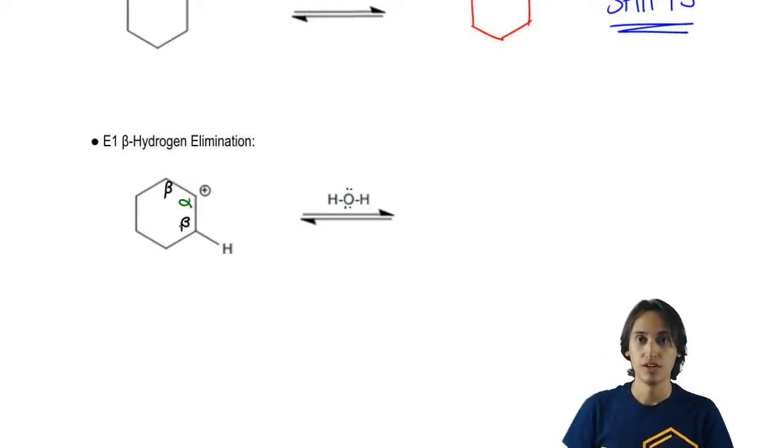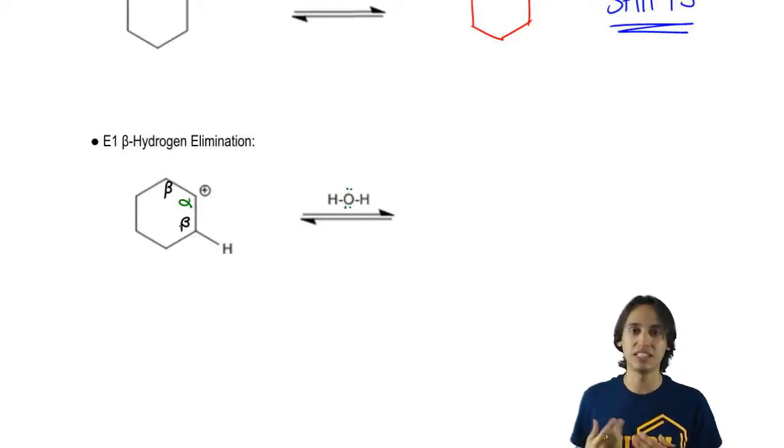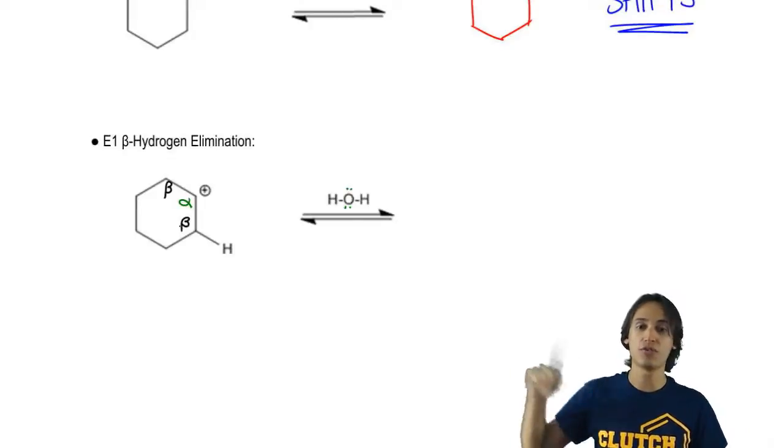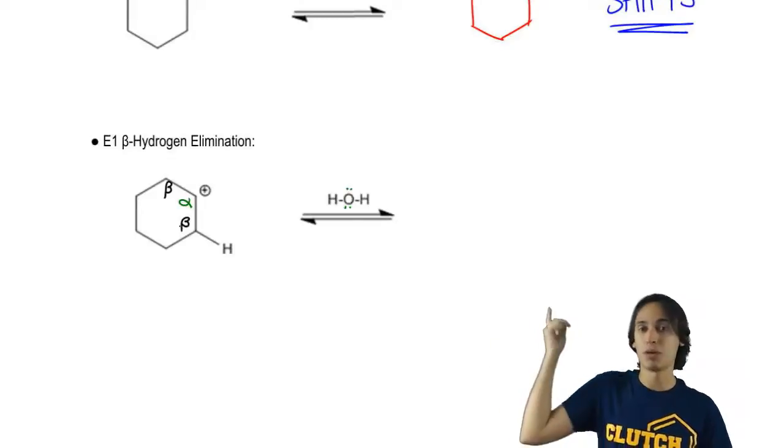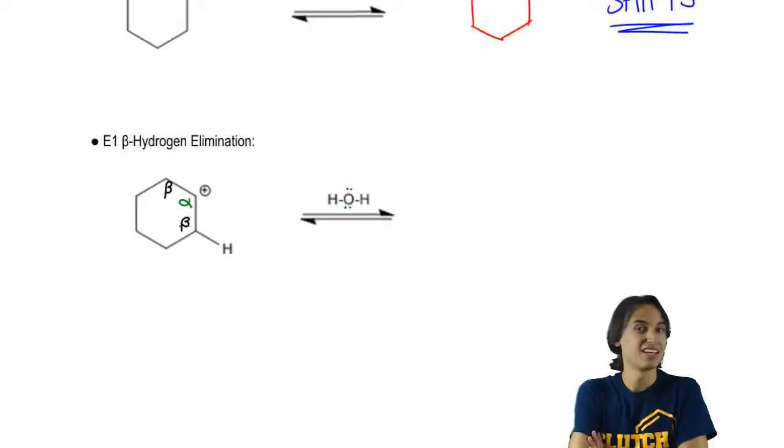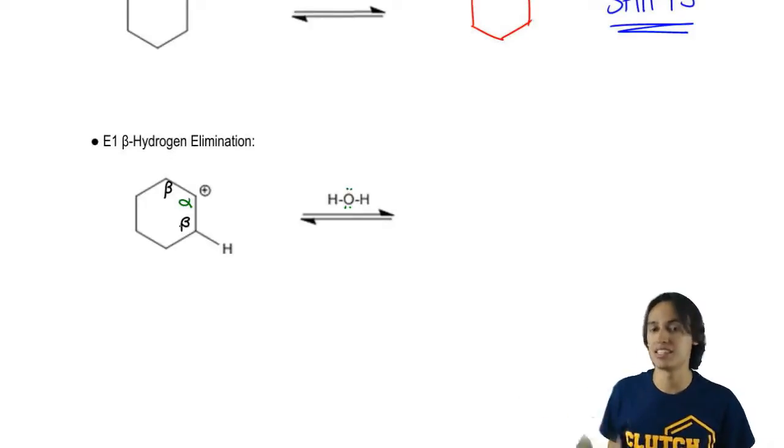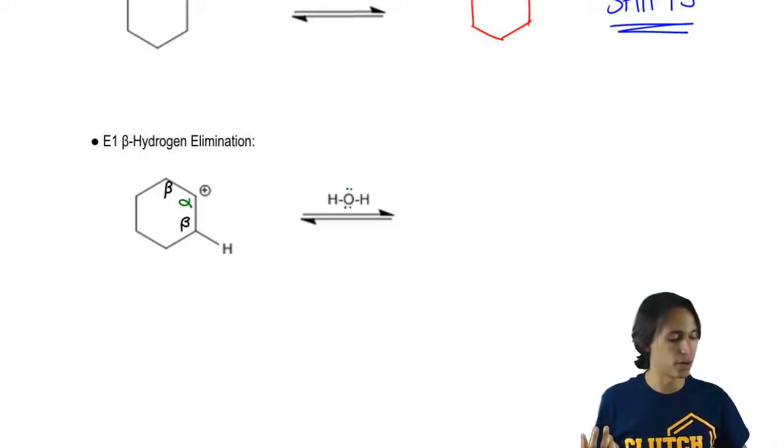My question is do any of these beta carbons have at least one hydrogen on them? And actually they do. They both have at least one hydrogen. Is there a difference between which one I use? Could I use the top one or the bottom one and get the same thing? Yeah. It doesn't matter because both of them would lead to the same product. So let's just go ahead and use the bottom one.